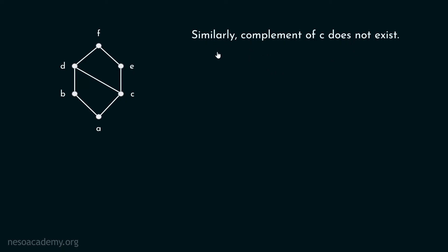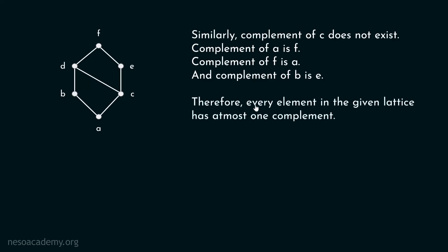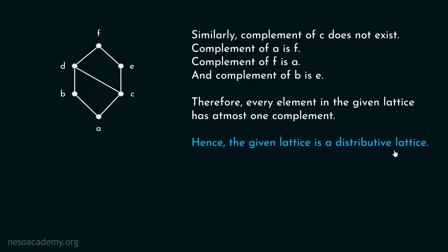The complement of A is F and the complement of F is A — these two are complements of each other. The complement of B is E and the complement of E is B. Every element in the given lattice has at most one complement. Hence, the given lattice is a distributive lattice.